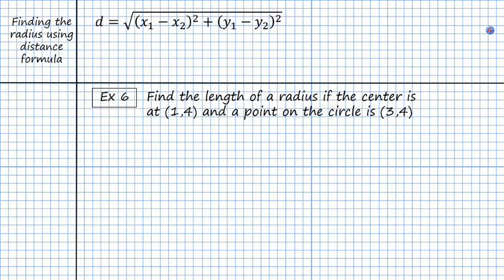All right so the distance formula is something that you guys are familiar with. We did it last semester when we had two points and I wanted to find the straight line distance between those two points. The distance is equal to the square root of x1 minus x2 squared plus y1 minus y2 squared. Now what's interesting is that this formula itself comes from our Pythagorean theorem.